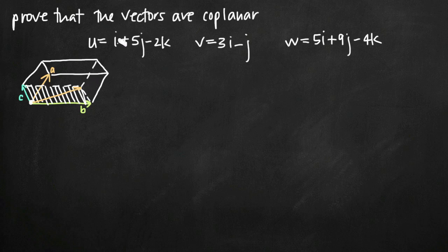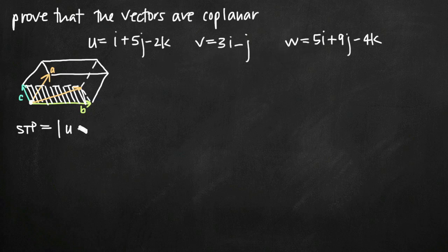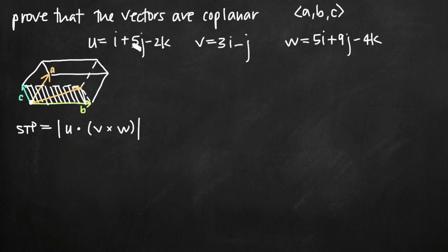That's why calculating the scalar triple product is so convenient. We want to calculate the scalar triple product and verify that it's zero. The scalar triple product (STP) is computed by taking the dot product of U with the result of the cross product of V and W. The cross product of V and W gives a vector in the form (a, b, c), and then we take the dot product of that with U to get the scalar triple product.